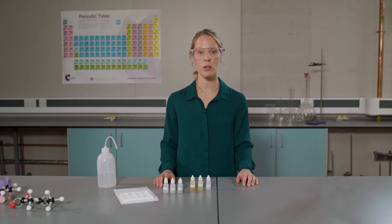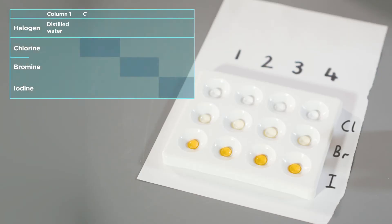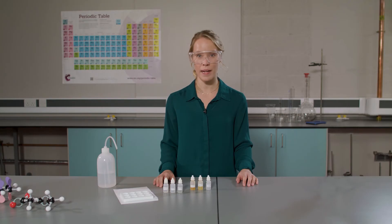It is important to make careful observations and note down any changes in a table. Remember that the colour of chlorine water is described as colourless and not clear. This is because a clear solution is simply one that does not contain any particles in the solid or gaseous state. So the colour of bromine water can be described as clear pale yellow. I'm going to start by adding distilled water to the first column.